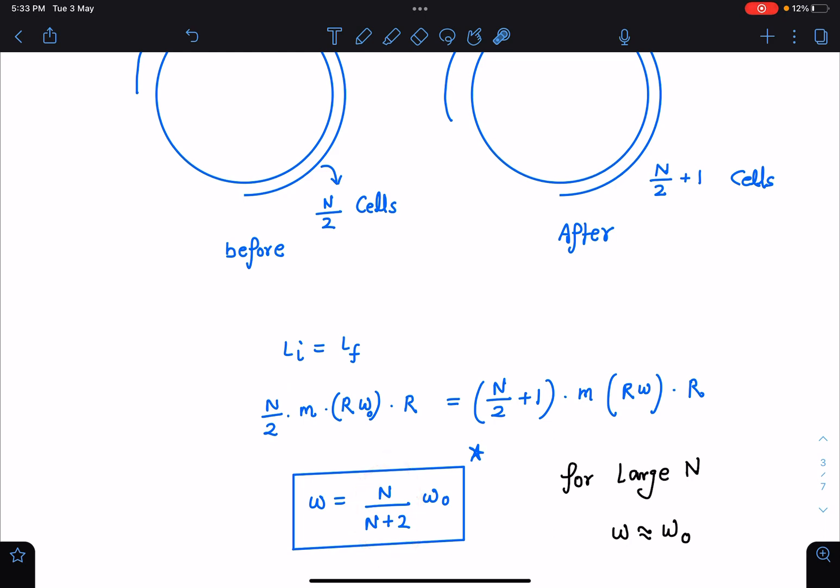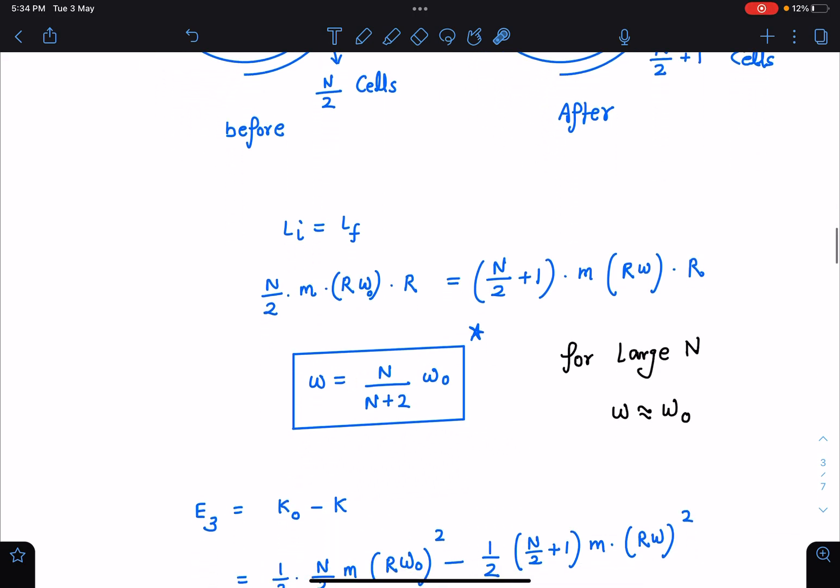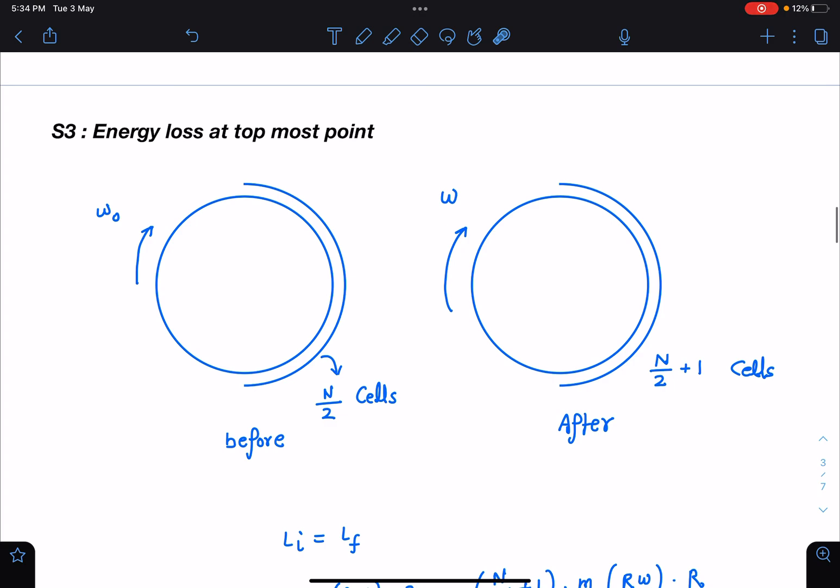This will be equal to N/2 plus 1 times m R omega into R. So from here you can see the two omegas we can relate with each other. And you can see here omega is equal to N/(N+2) times omega naught. For large number of N, like in this problem it is given, this is 200 and this is 202, or 201 and 203. So these values are very much nearby, and that is what we were expecting also, because in steady state that omega is assumed to be constant.